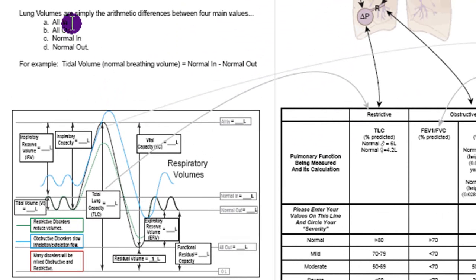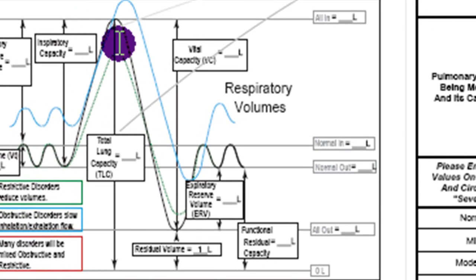There's all-in, when you ask somebody to breathe in all the air, how much air can they get in? There's all-out, how much air can you get out? There's normal-in, what's the normal volume of air when you breathe in? What's the normal volume of air when you breathe out? And all of these lung volumes down here then basically are simple arithmetic combinations of those four values.